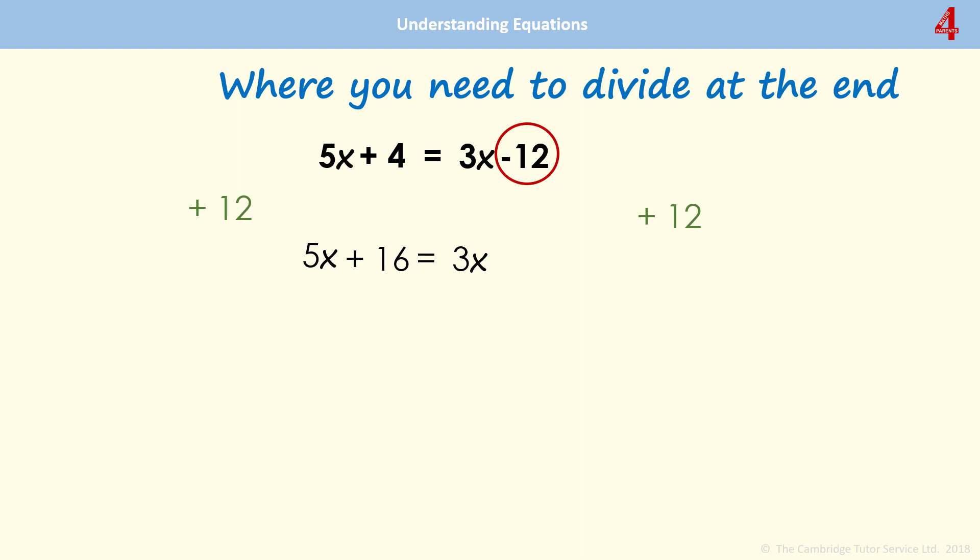Now I need to get rid of the 5x on the other side. If I take away 5x from that side, I just have the 16. On the other side, I had 3x and I've taken away 5. So that leaves me with negative 2 or minus 2x. If I ignore the negative to start with, 16 divided by 2, that's 8.